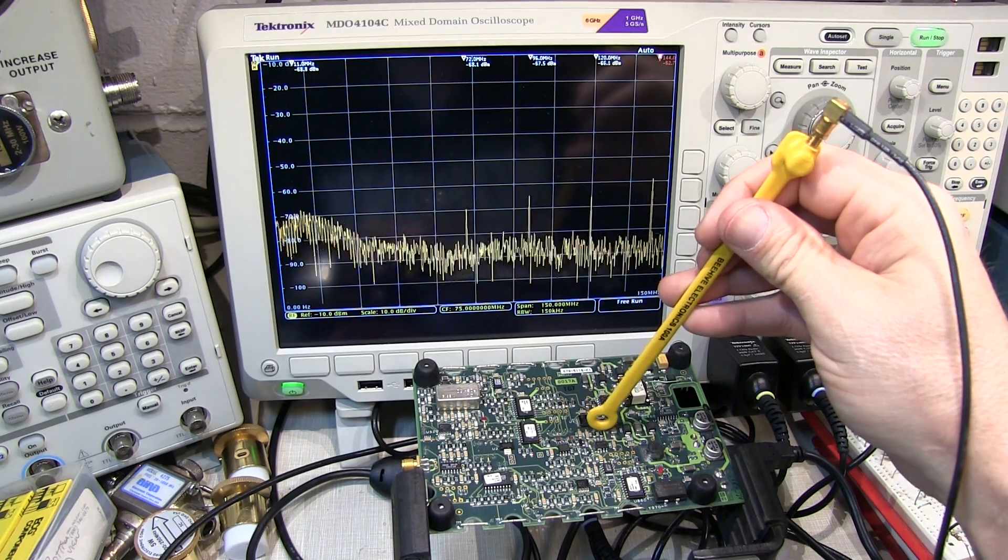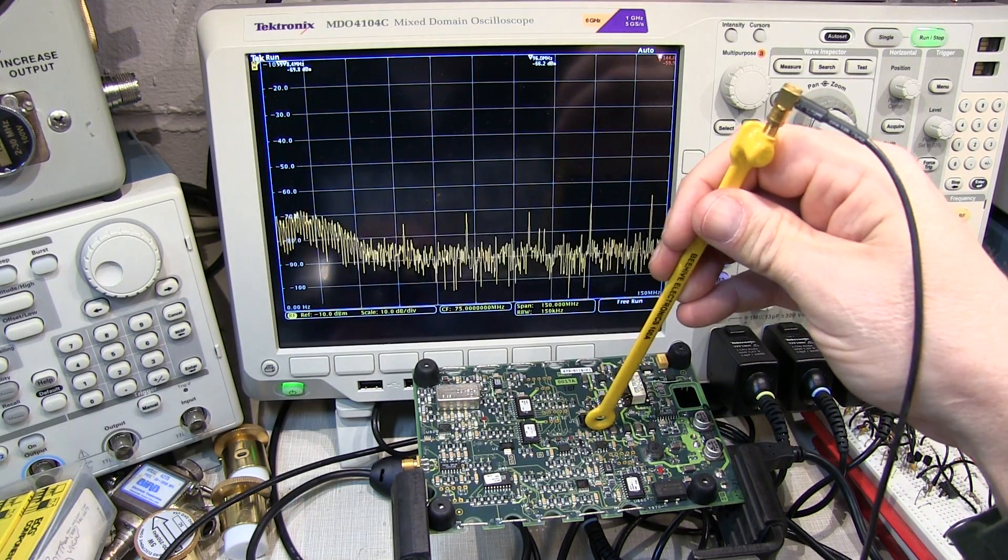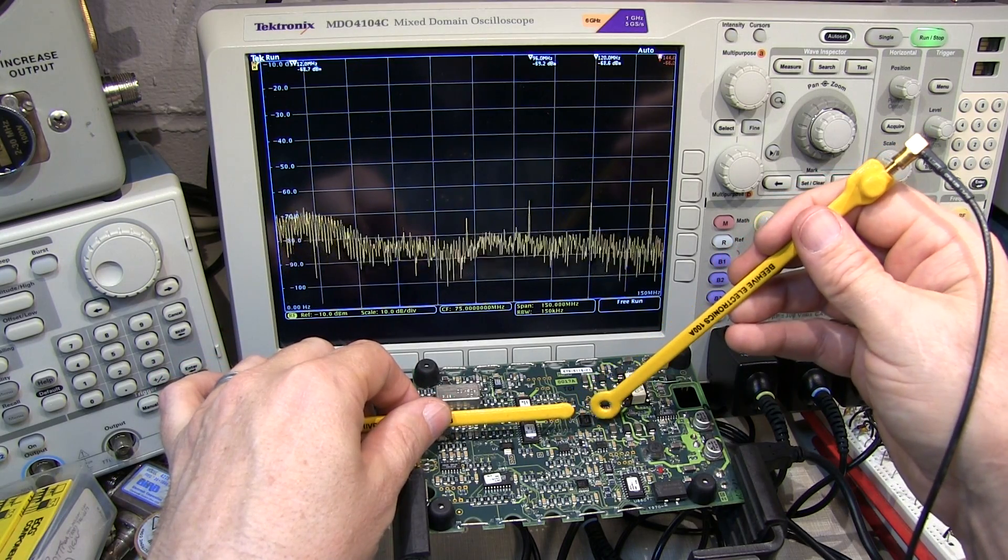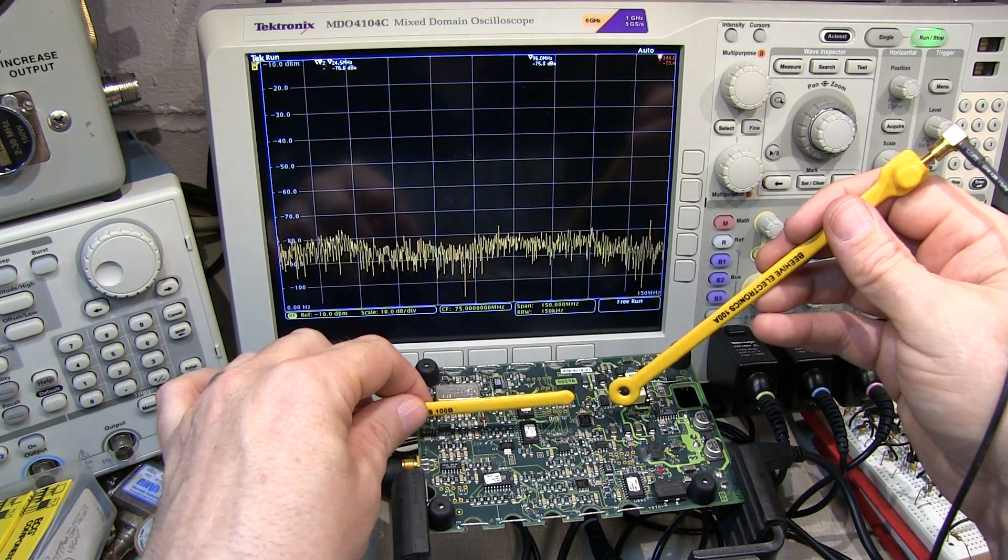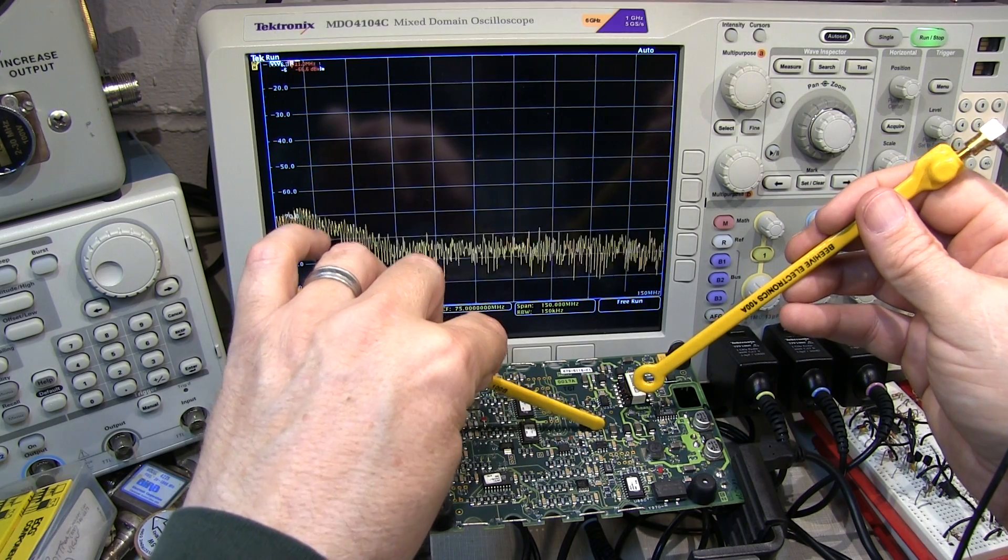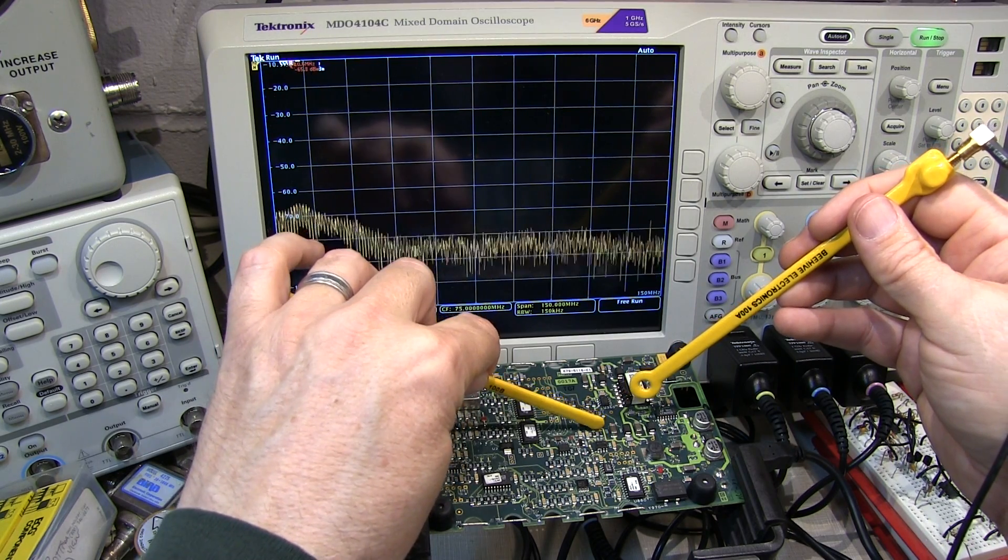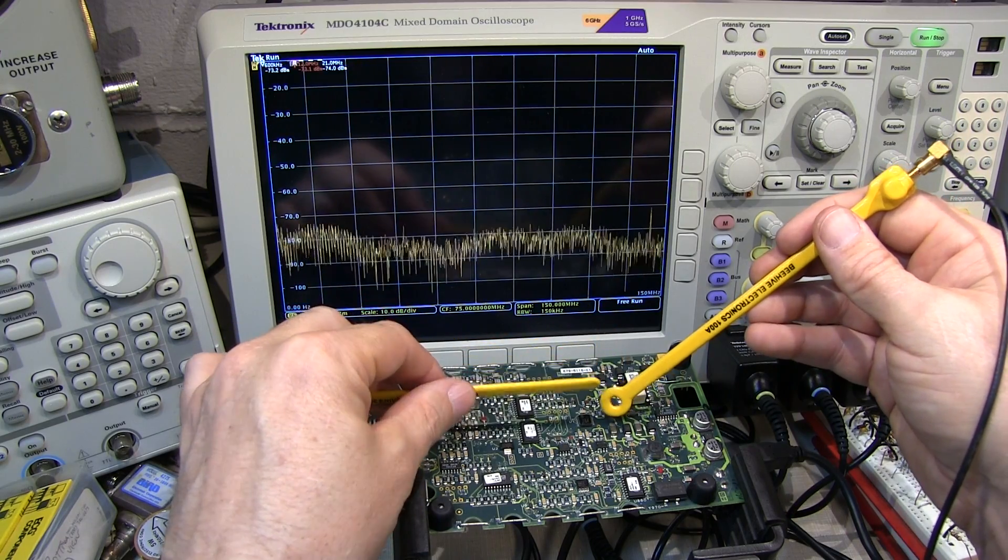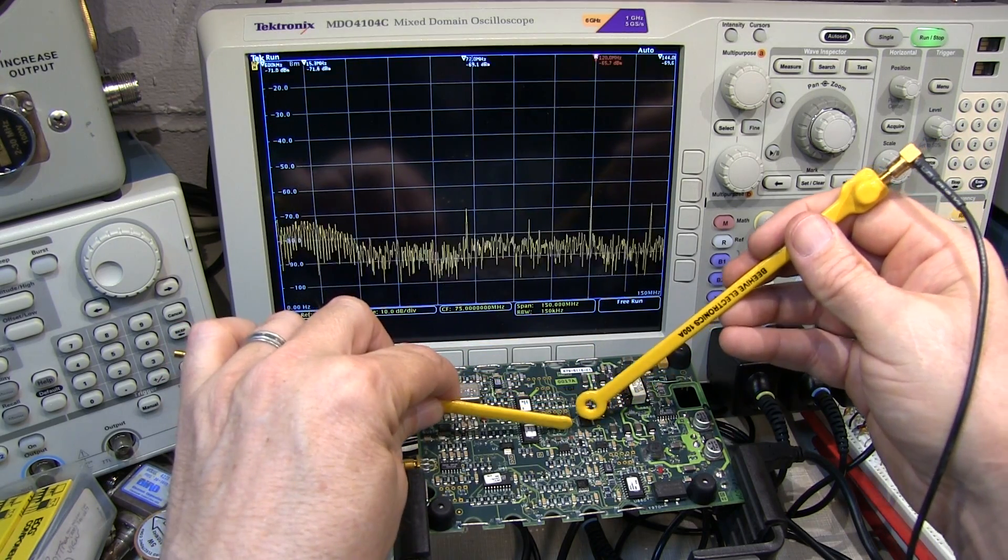Now many times you might have a very dense board and you can't narrow it down to a particular trace. What you can then do is switch to a smaller diameter H field probe. This will be less sensitive, but it'll allow you to just distinguish between two traces that are close together to see which one is carrying that offending current that's creating the offending emission.